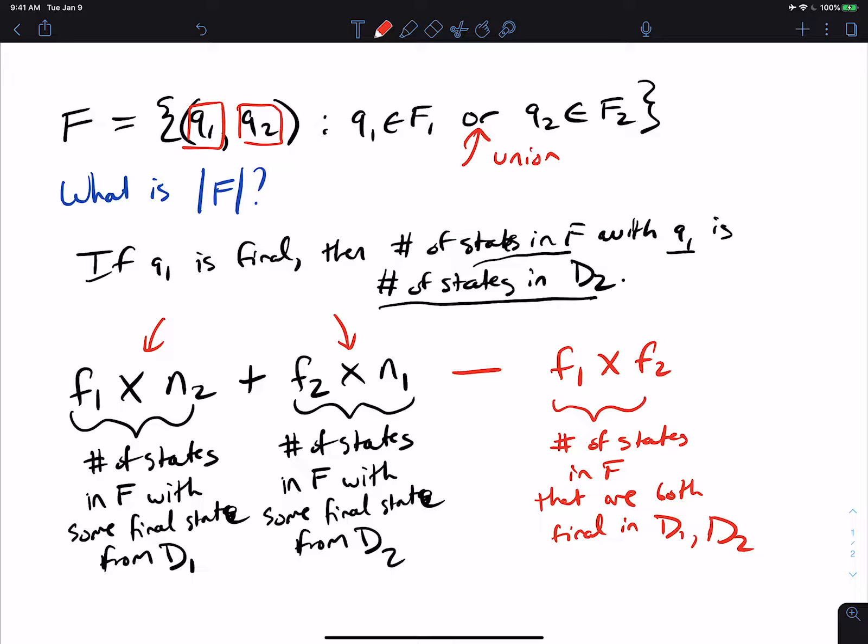And that's all we need to do, because all the other possibilities are only counted once. So the number of final states is F1 times the number of states in the second one, plus the number of final states in the second one, times the number of states in the first, minus the product of the number of final states in both.